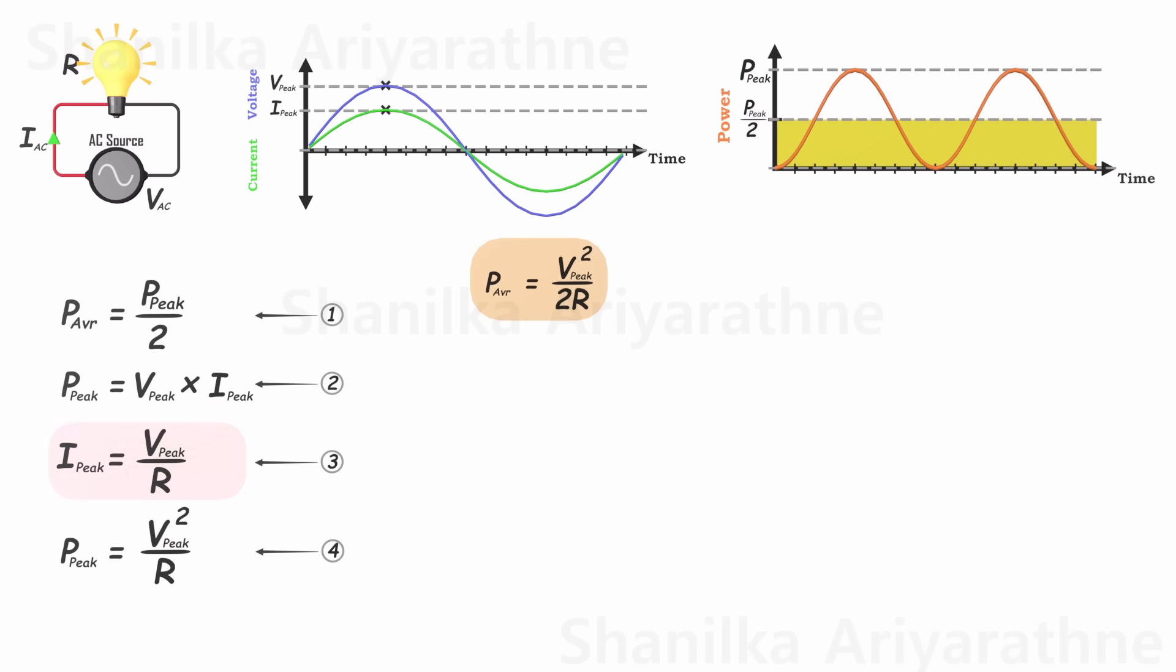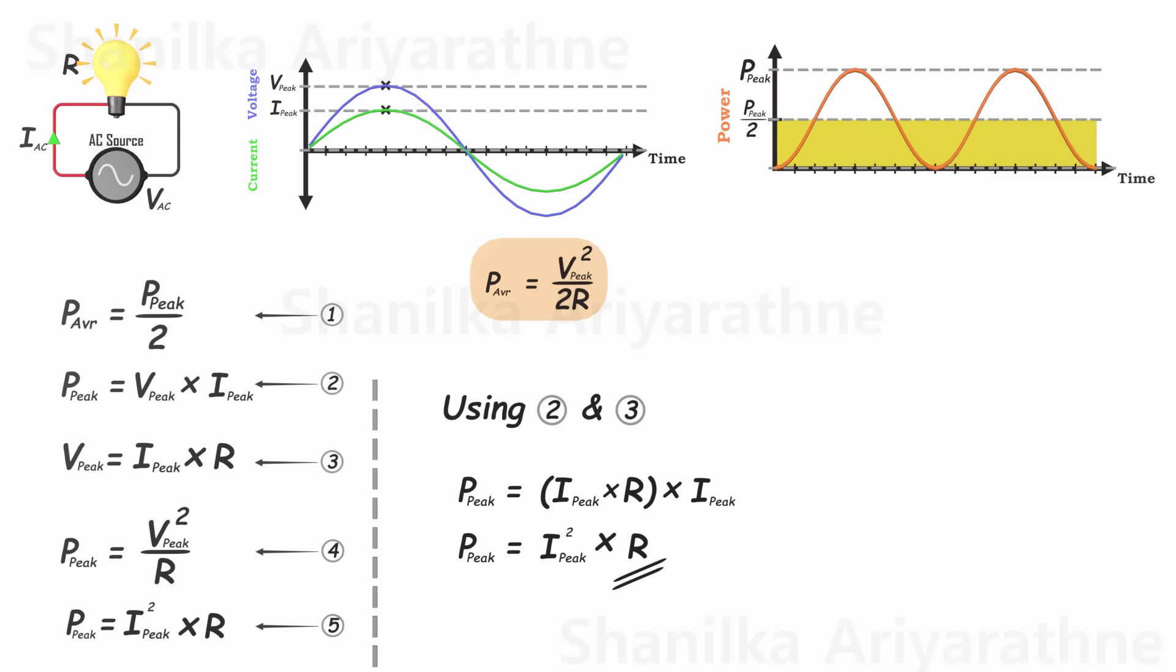Let's revisit equation 3, rearrange it, and express the peak voltage in terms of peak current and resistance. Utilizing equations 2 and 3, we can then articulate the peak power using peak current and resistance, establishing our fifth equation.